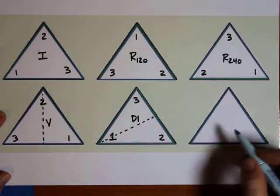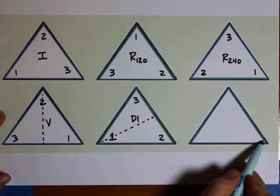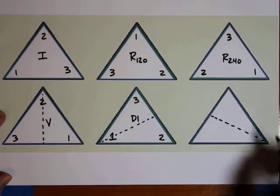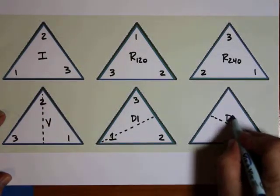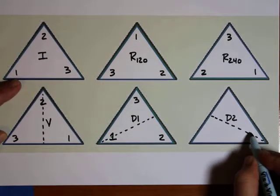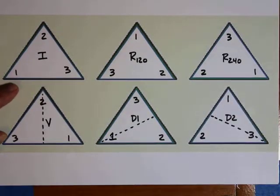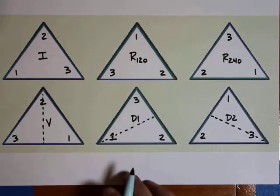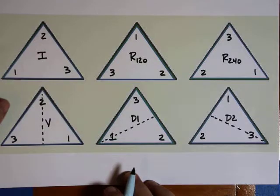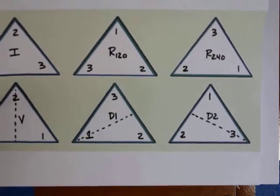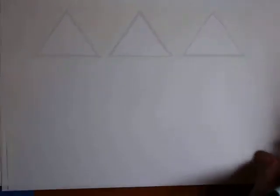The next possibility is a reflection about a different diagonal line starting up top and going down — I'll call this D2. Here, 3 stays fixed and 2 and 1 are swapped. So those are my 6 elements of the dihedral group. Remember, a group is a set with an operation, so we need to look at what the operation is in this case.